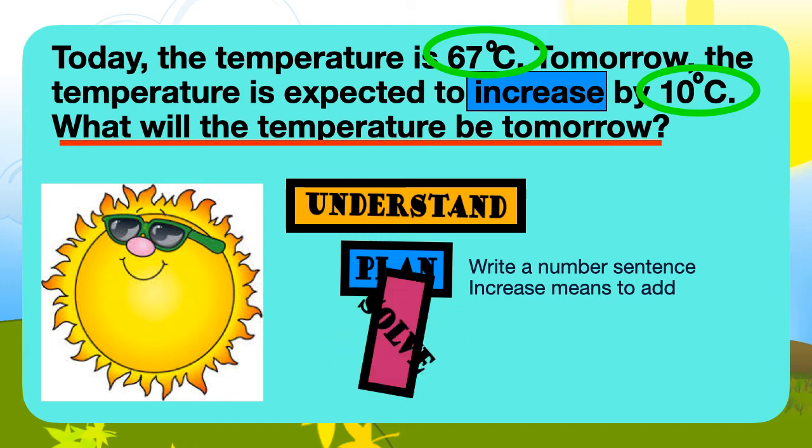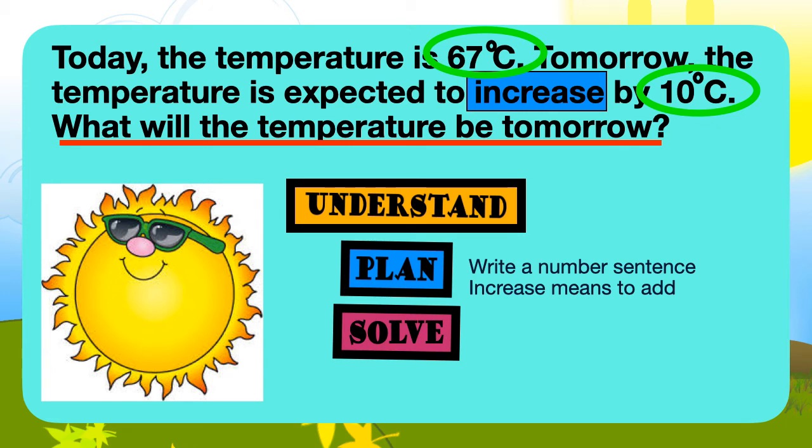In solving, we must set it up. 67 plus 10. Let's add now. 7 ones plus 0 ones is 7 ones. 6 tenths plus 1 tenths is 7 tenths. Our answer is 77 degrees Celsius.